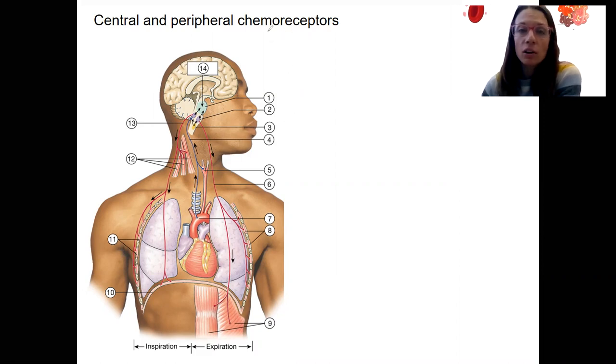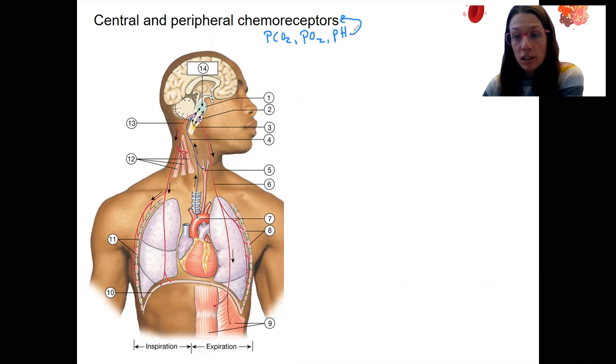So altered PCO2, altered PO2, and pH are going to be detected by chemoreceptors. These chemoreceptors can be located centrally, so within the brainstem itself.